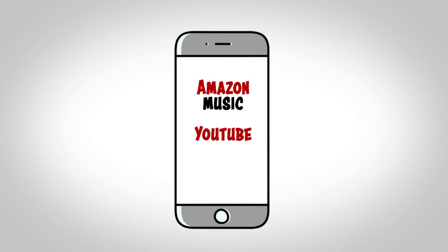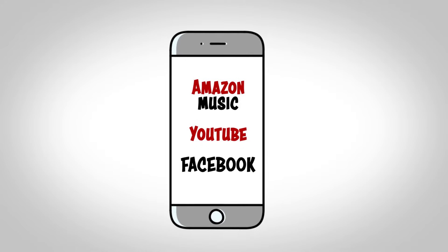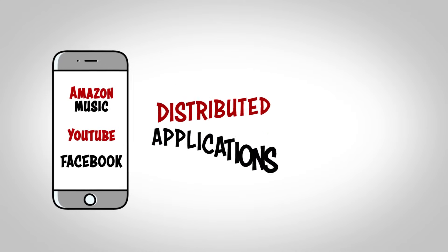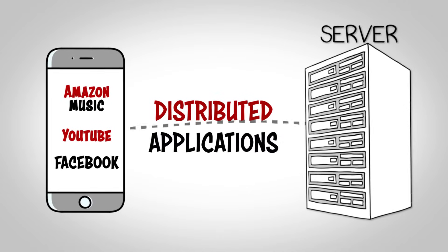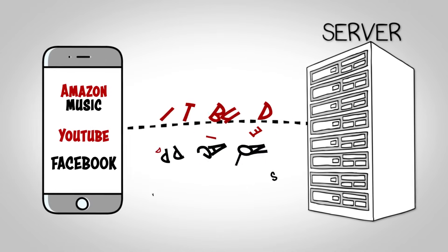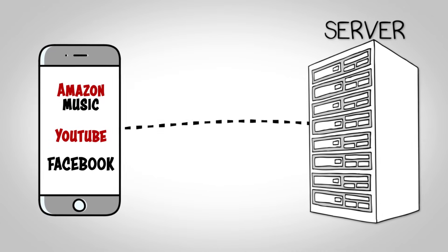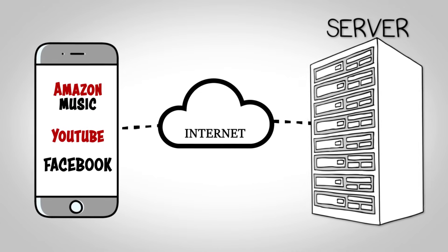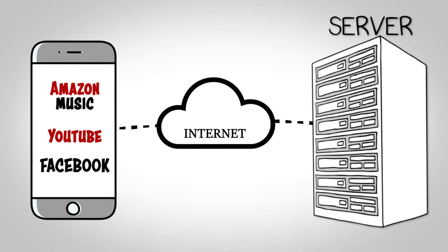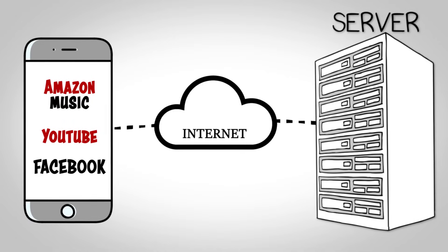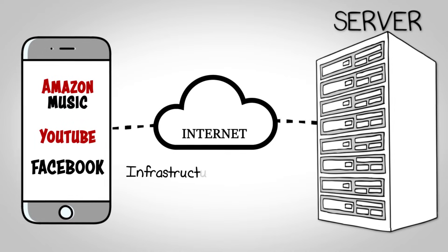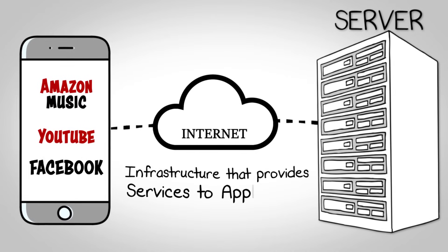In a smartphone, there are multiple applications which we use to stream music, videos, or to send messages. These applications are called distributed applications because they involve multiple end systems that exchange data with each other. To make these applications work, the internet provides an interface that these applications can use to send or receive information. So we can say that internet is an infrastructure that provides services to the applications.